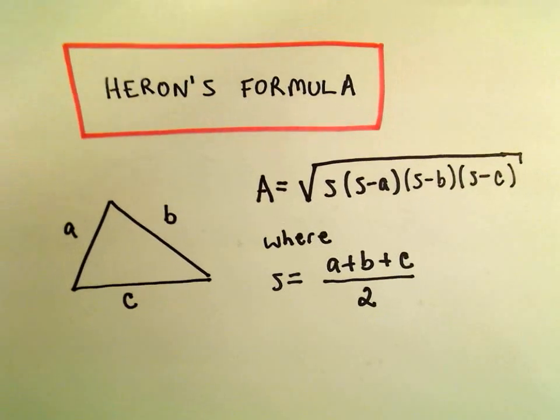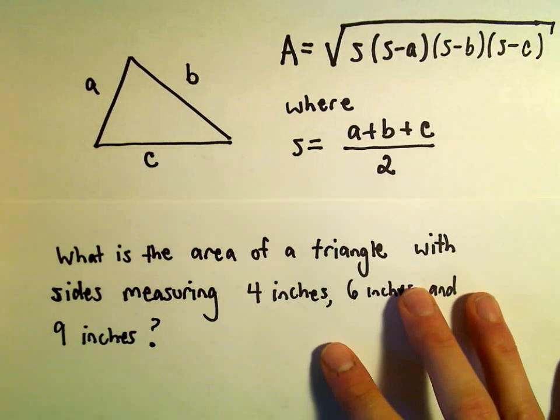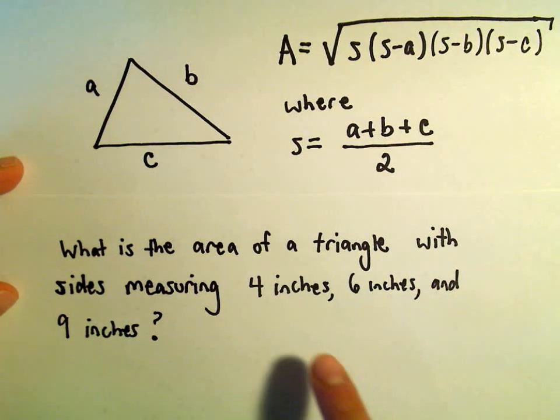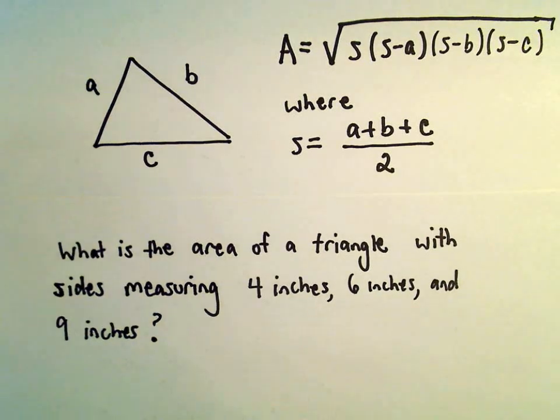So let's do a little simple example here, just illustrating this. So we want to know what's the area of a triangle with sides measuring 4 inches, 6 inches, and 9 inches.